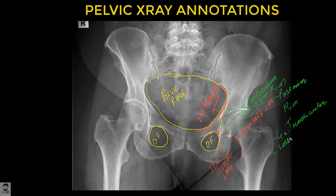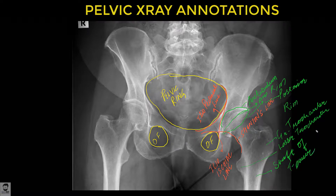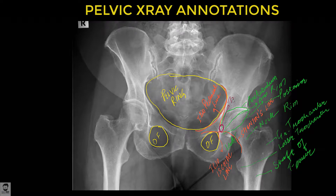Next to the acetabulum is the femur bone. That's the greater trochanter, that's the lesser trochanter, and this is the shaft of the femur. You obviously also have the neck and the head of the femur. And this small structure here is called the teardrop — because it looks like a teardrop.